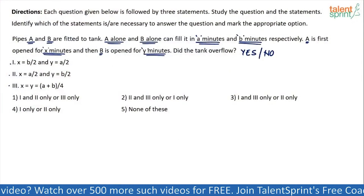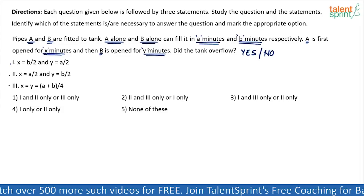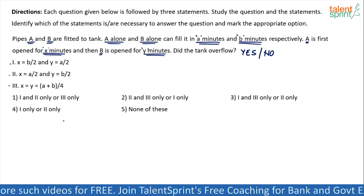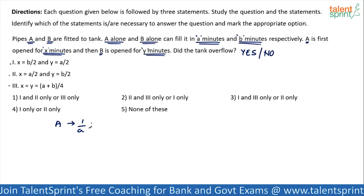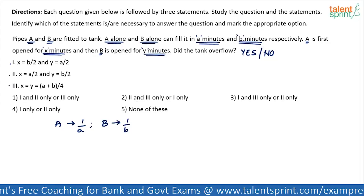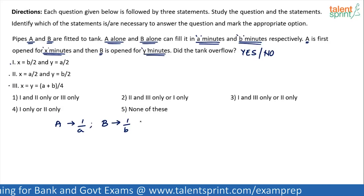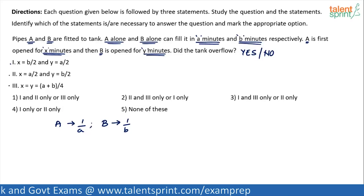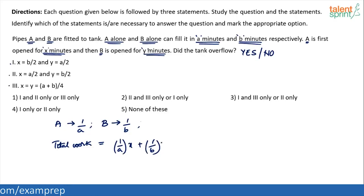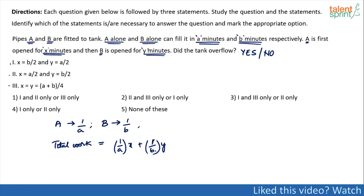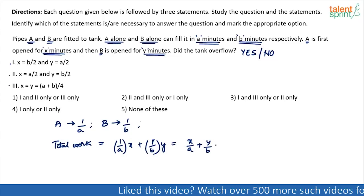Now let's go back to this question. A has worked for X minutes and B has worked for Y minutes. A's capacity is 1/A because A can do the full job in A minutes. B's capacity is 1/B. So the total work done equals (1/A × X) + (1/B × Y), which simplifies to X/A + Y/B. This is the total work done.